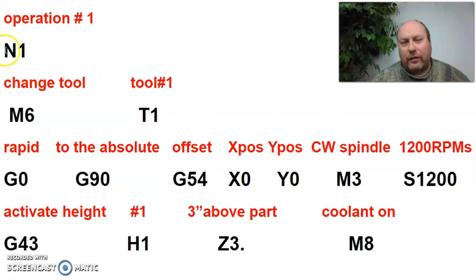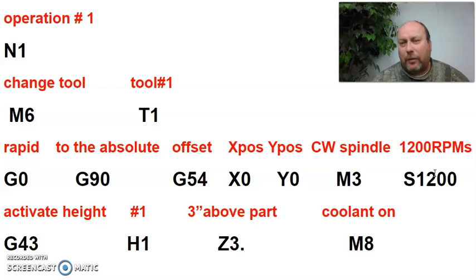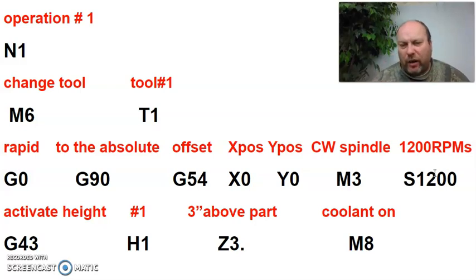Now I'm going to read this like a sentence: This is operation number one. Machine, I want you to change the tool to tool one. Then I want you to rapid, absolutely, referring to this zero, to X zero, Y zero. I want you to turn the spindle on at 1200 RPMs. In the next video, I'm going to write this same program and you will see the machine do that.